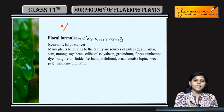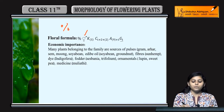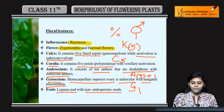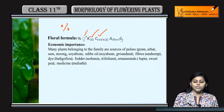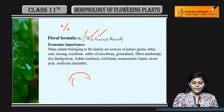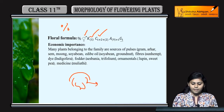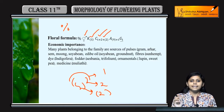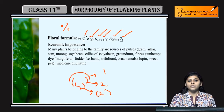Floral formula mein hum dekhte hain: zygomorphic, bisexual, five fused sepals K(5), Corolla R5 with vexillary estivation. Vexillary estivation mein ek standard hota hai, two lateral hoti hain aur two fused hoti hain. Isliye ise 1+2+(2) likha jaata hai last mein. Androecium A(9)+1 aur superior monocarpellary ovary G with underline.